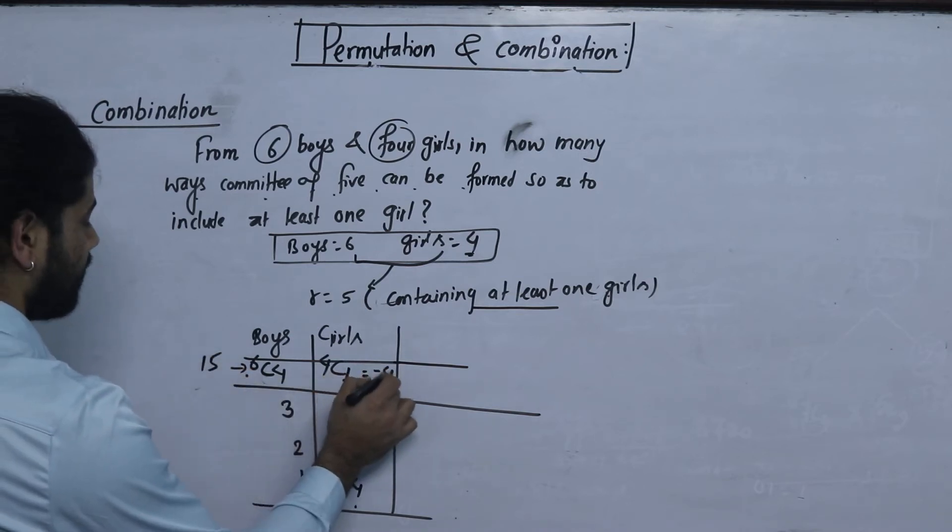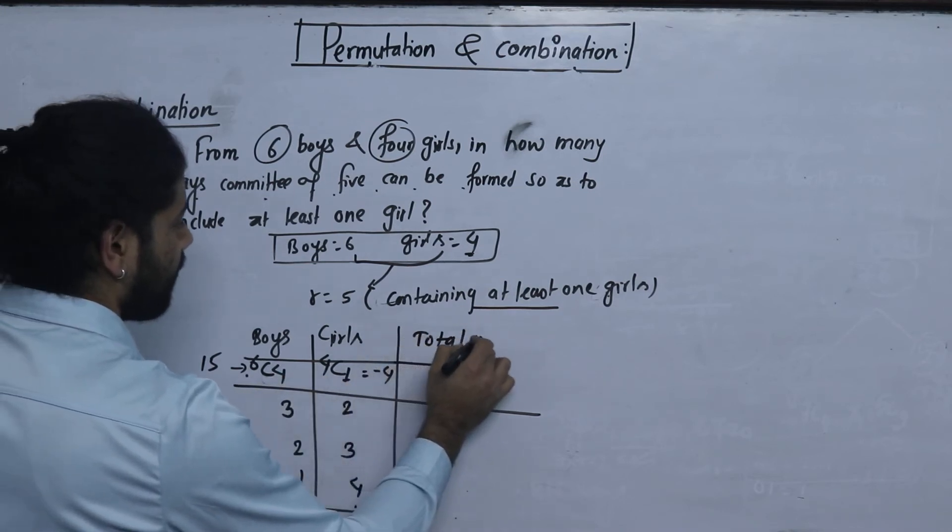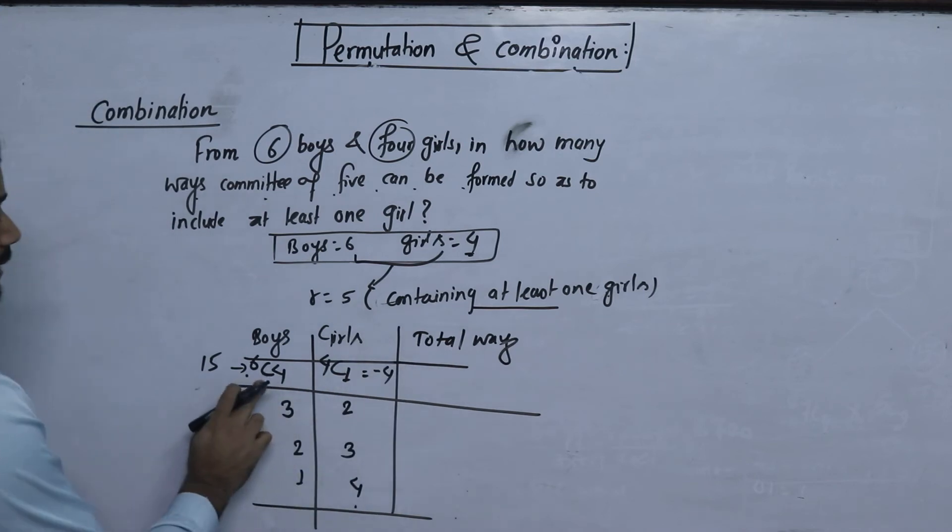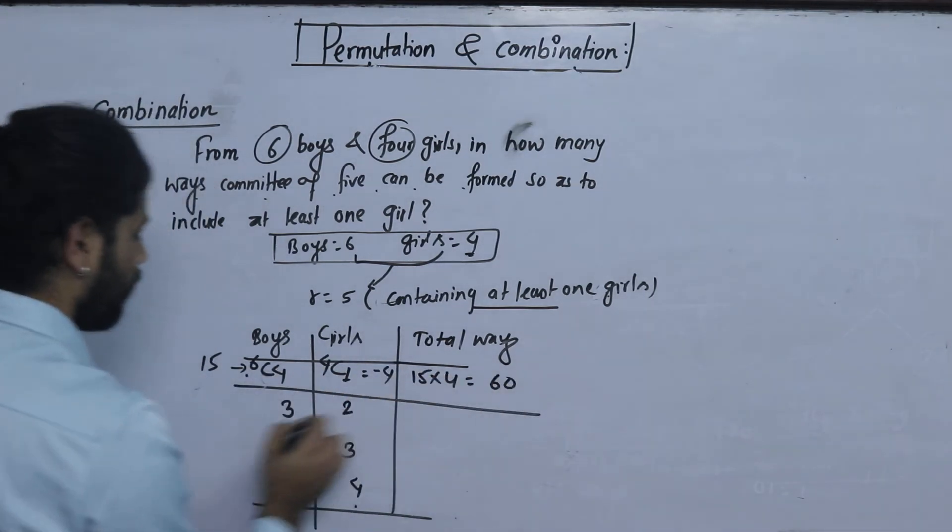Now, we have 4. If we have 1, we have total value 15 into 4. And here, 60 order wise, we have 1.